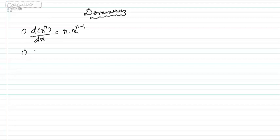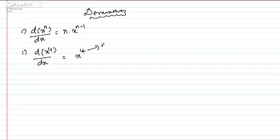We will start with problem number 1: you have to differentiate x power 4. The rule says differentiation of x power n is equal to n into x power n minus 1. Here you have x power 4 and this 4 will be treated as n. So your n comes here — that is 4 into x to the power n minus 1, that is 4 minus 1. So the answer will be 4 into x power 3.